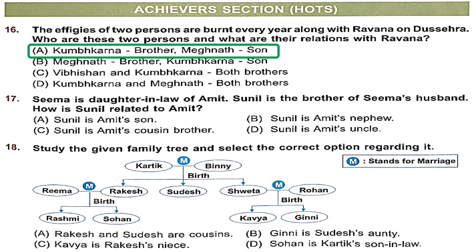Question 17: Sima is the daughter-in-law of Amit. Sunil is the brother of Sima's husband. Sima's husband and Sunil are brothers, and they are both sons of Amit. So how is Sunil related to Amit? Sunil is Amit's son. Option A is the right answer.